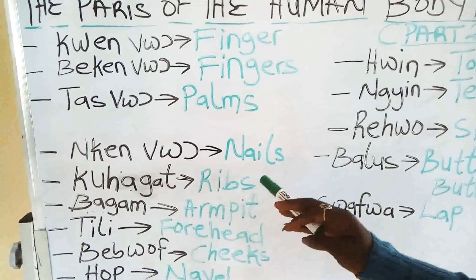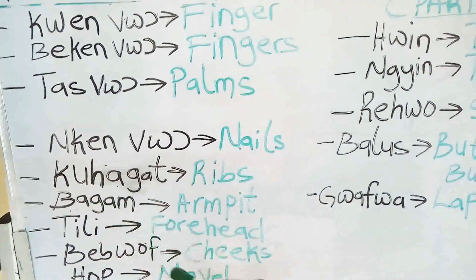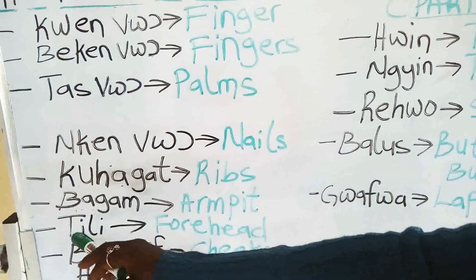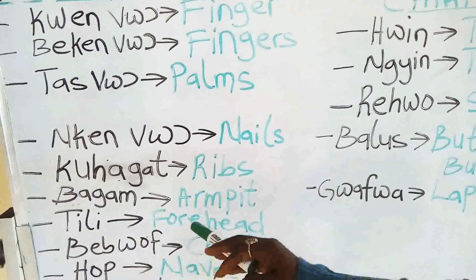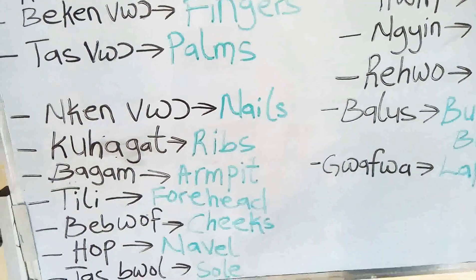Kuhagat, rips. Bagam, armpits. Tili, forehead. Bibwalf, cheeks.